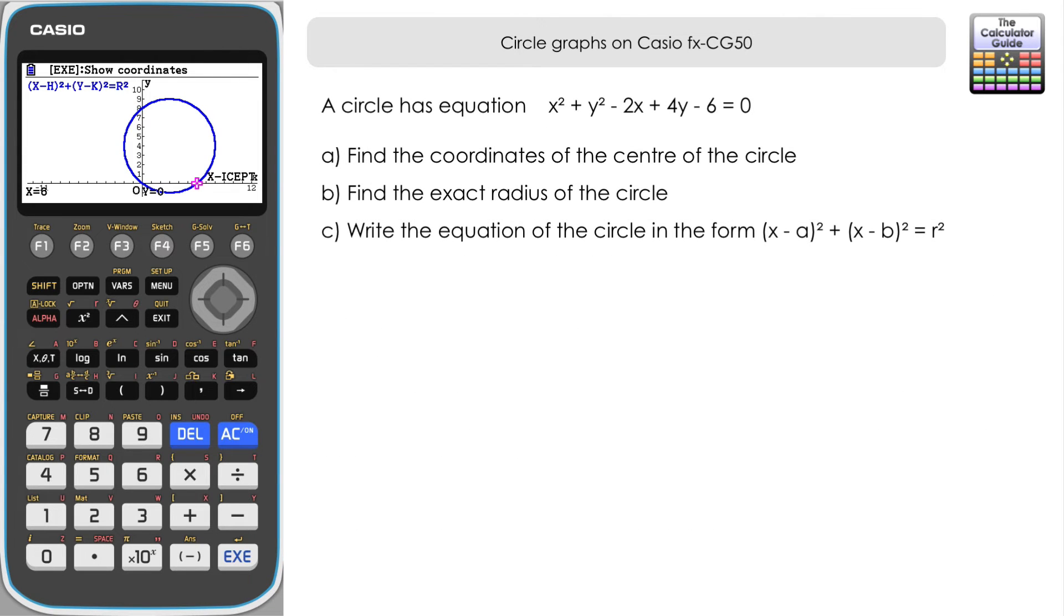Let's have a look at the second example here. We've got the equation for a circle displayed slightly differently. We've got the equation x squared plus y squared minus 2x plus 4y minus 6 equals 0. And we've got three things to do here. Find the coordinates of the centre of the circle, find the exact radius of the circle, and then write the equation in the form x minus a squared plus x minus b squared equals r squared.